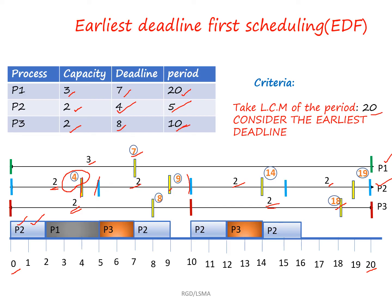Next, we check which remaining process has the earliest deadline. P1 has deadline 7 and P3 has deadline 8. So P1 has the earliest deadline. P1 must execute 3 units before deadline 7, so we assign P1 three times here.